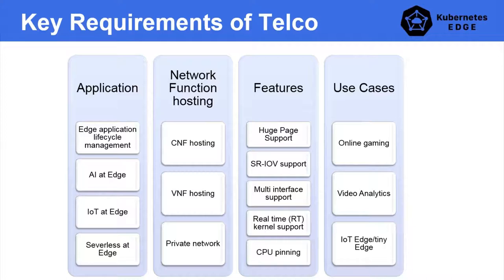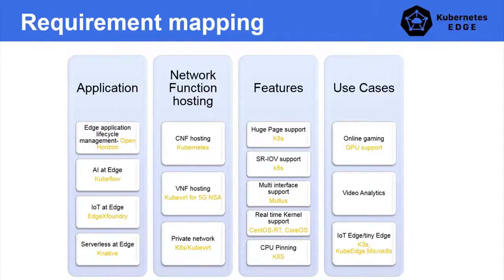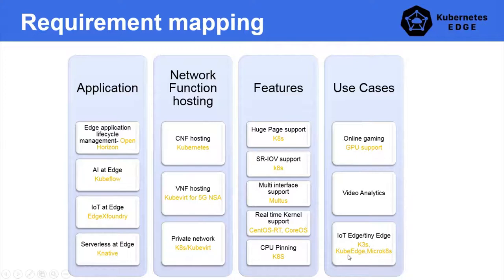From a use case perspective, use cases include cloud gaming, video analytics, IoT edge, and more. Many things are supported natively in Kubernetes — hugepage support and SR-IOV support are already there. For others, related projects can be used: Kubeflow for AI at the edge, Knative for serverless, KubeVirt for running virtual machines in a real-time context, and for tiny edge or IoT edge, lightweight Kubernetes distributions like K3s, KubeEdge, or MicroK8s — which have a very small footprint.